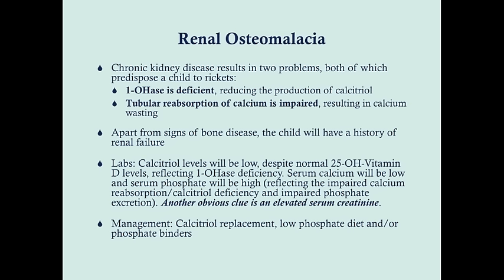What distinguishes renal osteomalacia from VDDR Type 1 is a high phosphate level — due to inability to excrete phosphate — and an elevated serum creatinine. Management is calcitriol replacement to address the 1-hydroxylase deficiency, plus a low-phosphate diet and/or phosphate binders. This helps keep serum phosphate low and also reduces PTH production, which would otherwise encourage phosphate reabsorption.